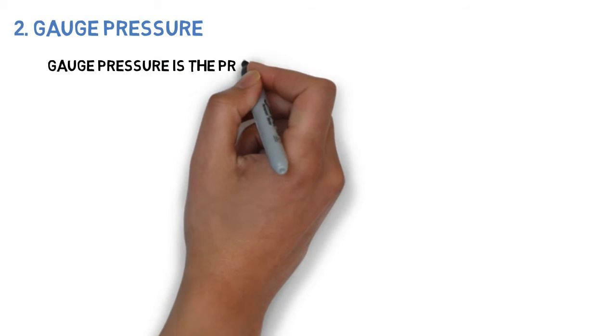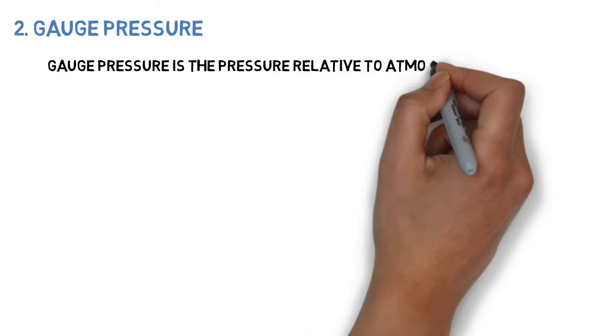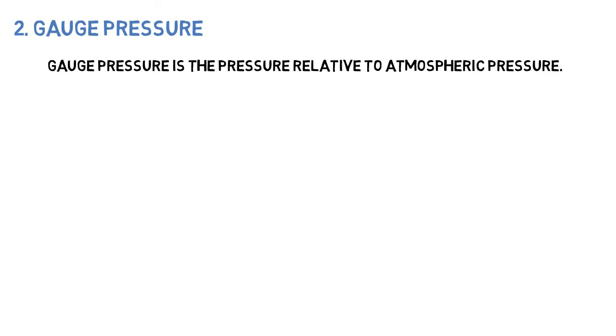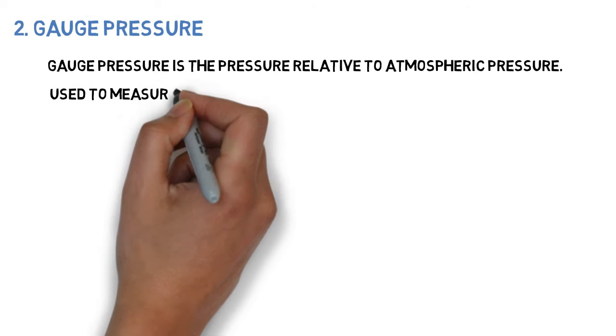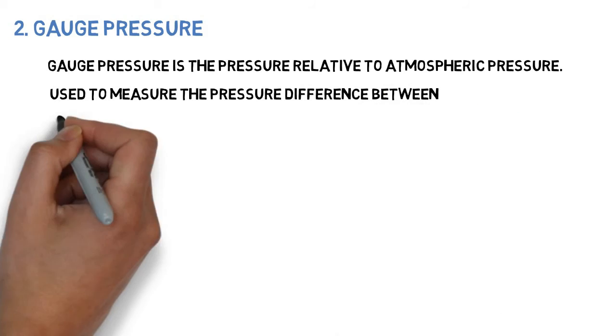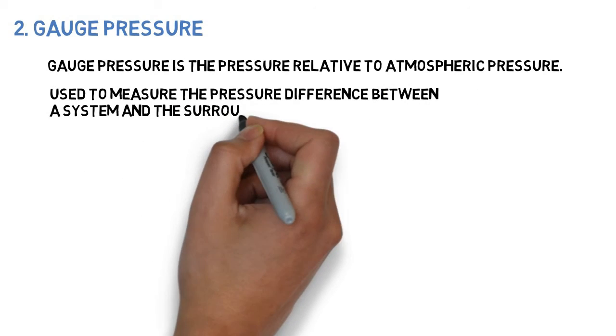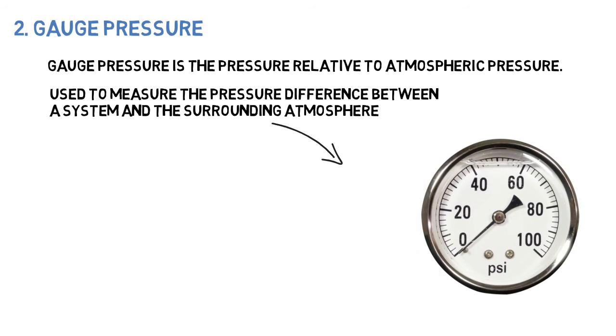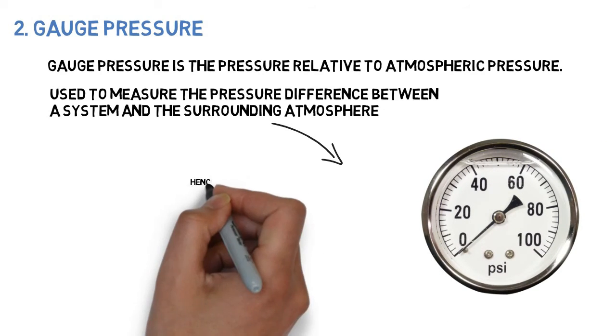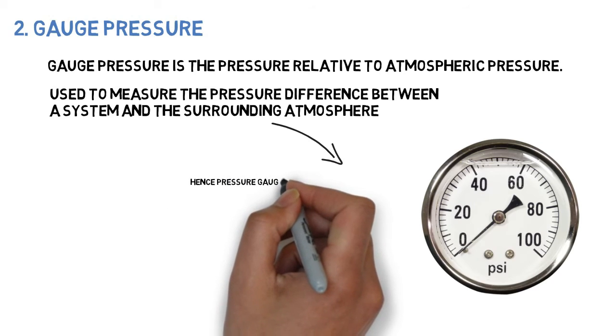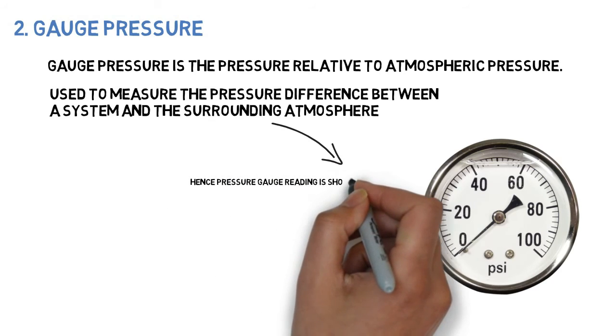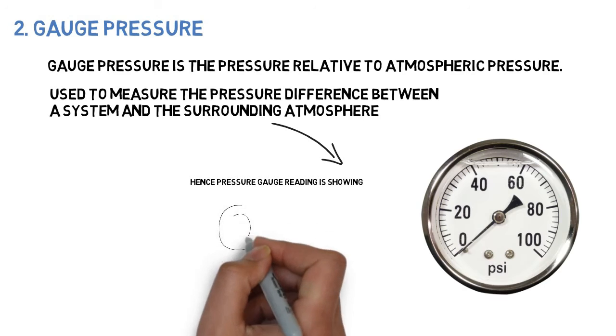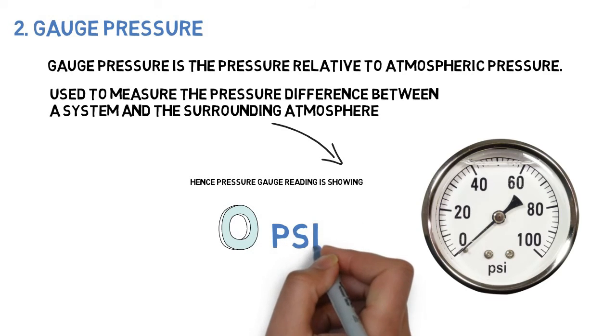Gauge pressure is the pressure relative to atmosphere. Gauge pressure is used to measure the pressure difference between a system and the surrounding atmosphere. That's why the reading of a pressure gauge is showing zero at atmosphere.